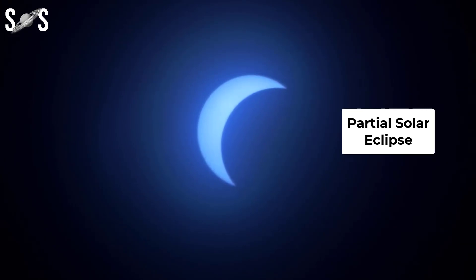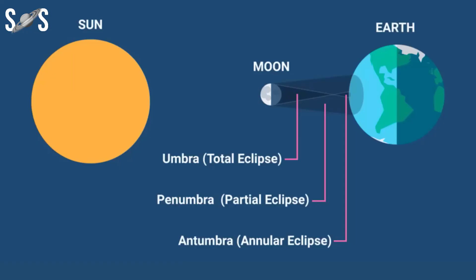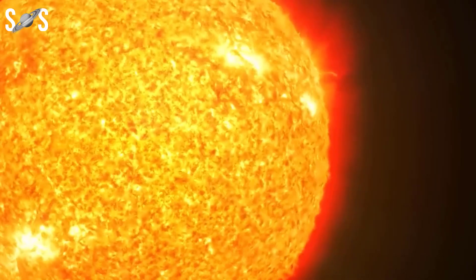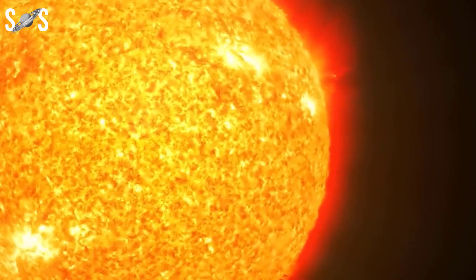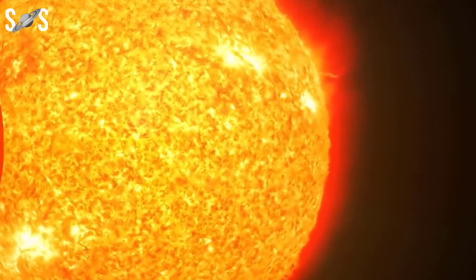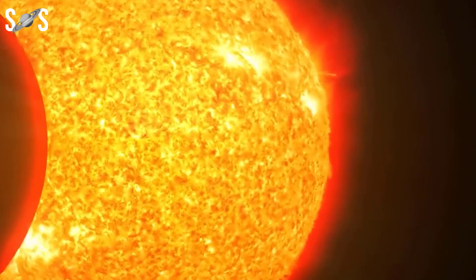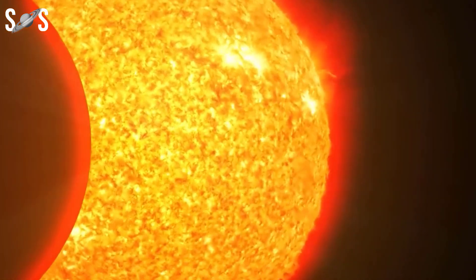The antumbra, a half-shadow that begins where the umbra ends, results in annular solar eclipses. During this type of eclipse, the moon looks a little smaller than the sun, so the edge of the sun's disk remains visible around the moon.